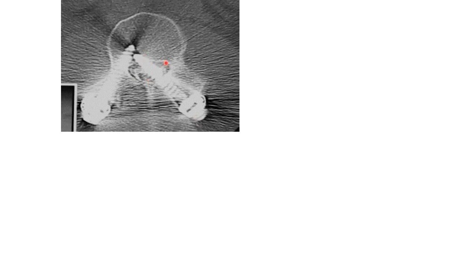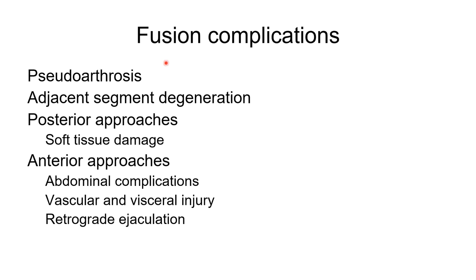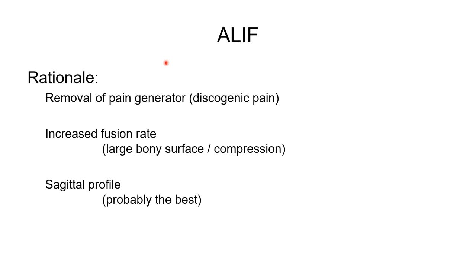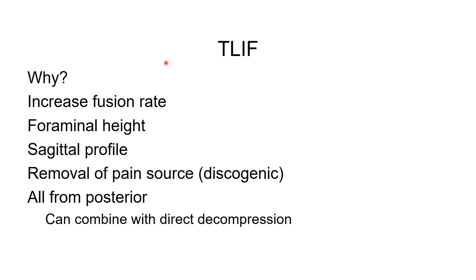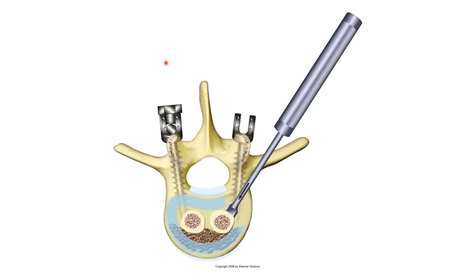Here's an example of a misplaced screw that has gone through the canal and caused nerve damage. Instrumentation can also cause non-union, accelerated degeneration of levels above, and injury to surrounding tissue. We can do the surgery from the front — called an anterior lumbar interbody fusion — where we open the belly, remove the disc, and place a cage with bone graft to create the fusion. Or we can go from behind, where we remove the facet joints at the back, remove the disc, and either pack bone or place a cage around the front to support the vertebra.